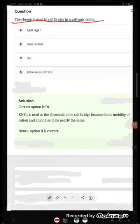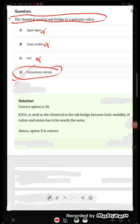The chemical used in the salt bridge in the galvanic cell is what? Agar agar - this is not the chemical. Gum arabic, not the chemical. Gel, not the chemical. It is potassium nitrate. That is very correct, because...